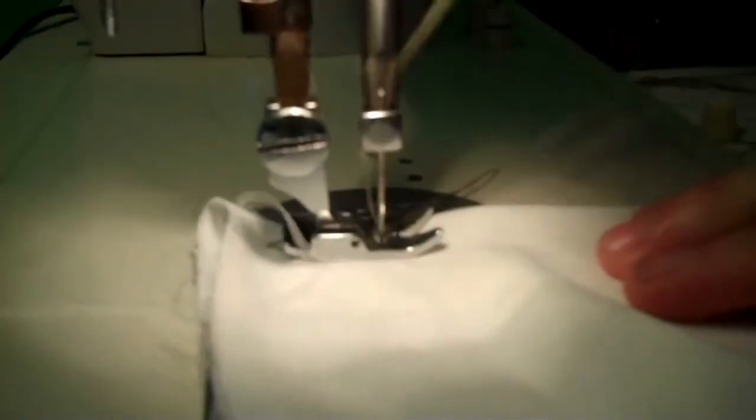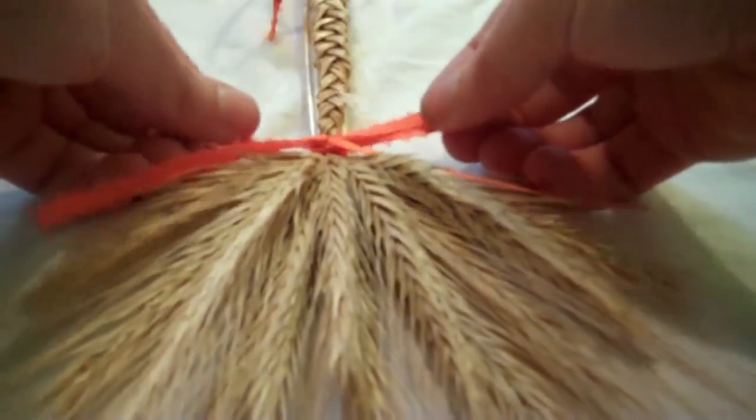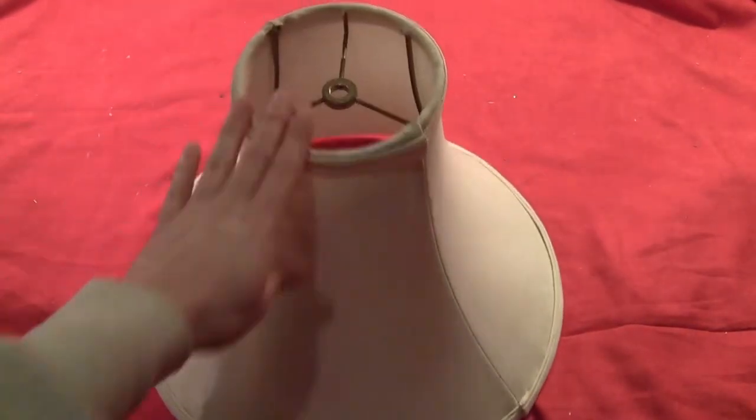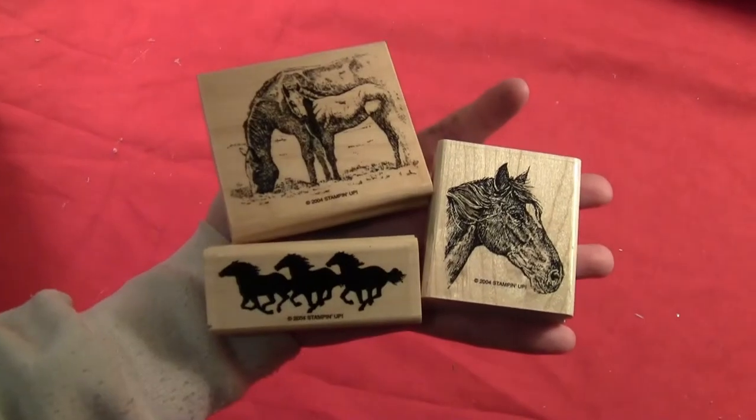So today I'm going to show you how to turn a plain old lampshade into a really easy hanging lamp. Start with a plain lampshade. This is one from a lamp whose base had shattered and couldn't be saved.